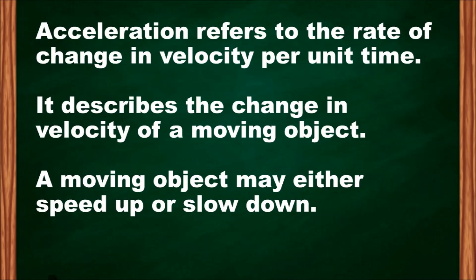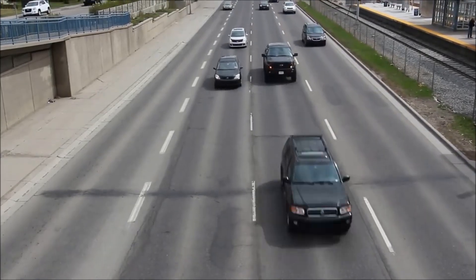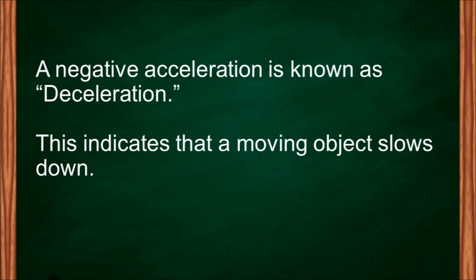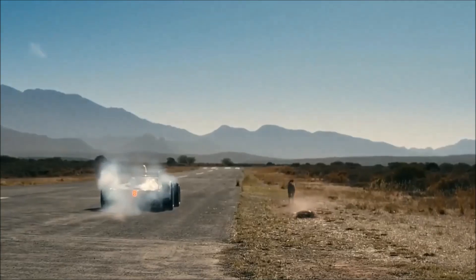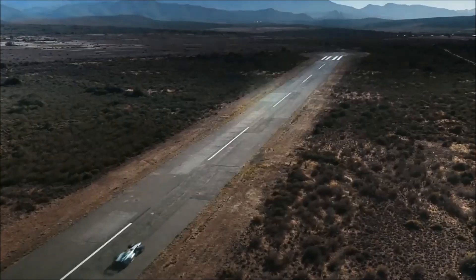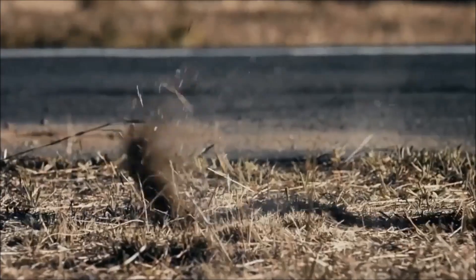Acceleration refers to the rate of change in velocity per unit time. It describes the change in velocity of a moving object. A moving object may either speed up or slow down. A negative acceleration is known as deceleration, which indicates that a moving object slows down. Always keep in mind: when there is a change in velocity, there is acceleration.